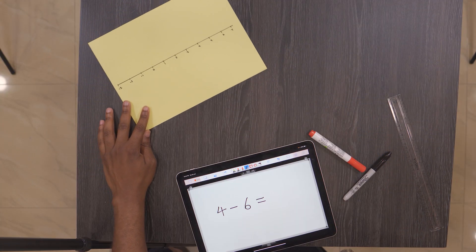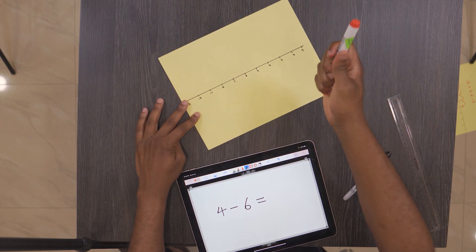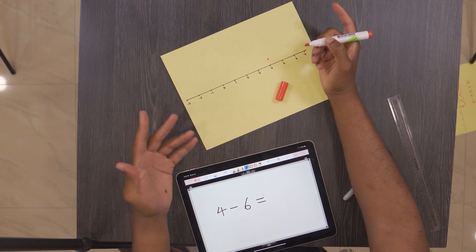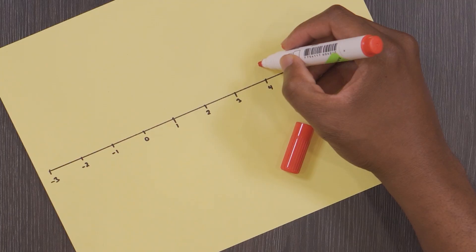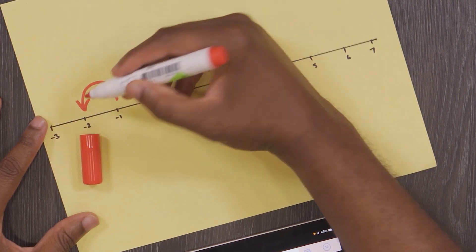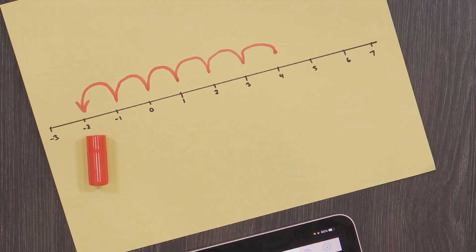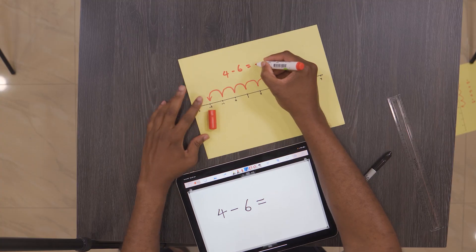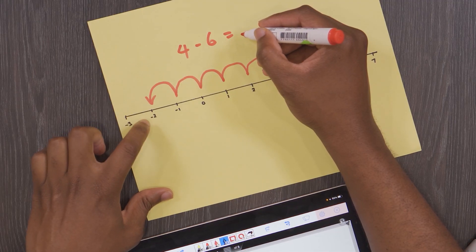Or if we have four minus six, we start off on four. Since we are subtracting in this case, we go backwards: one, two... five, six. You can think of subtracting as owing and going down the number line to the left, and adding as gaining, going to the right. Four minus six is negative two.